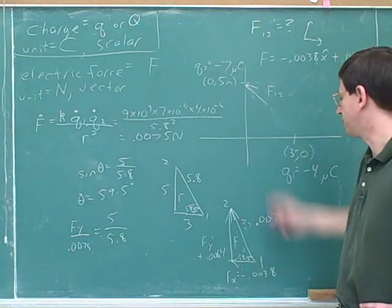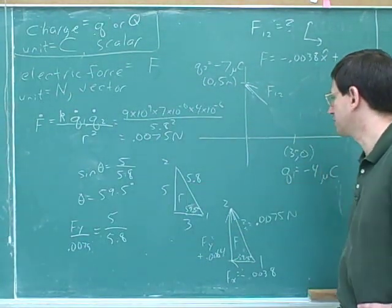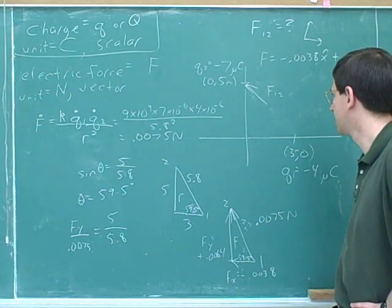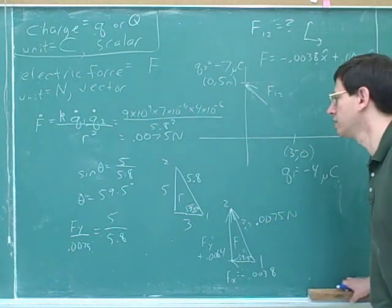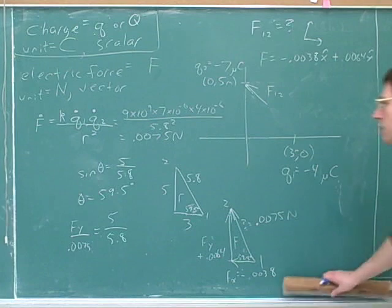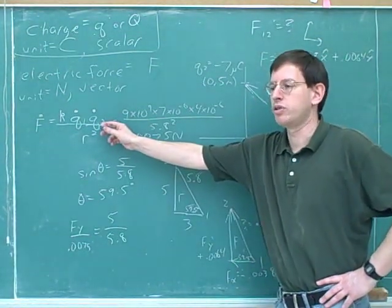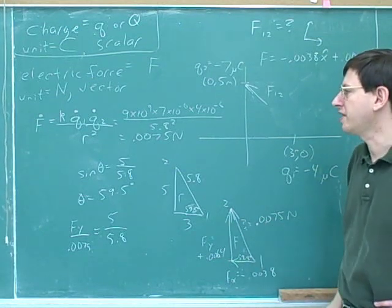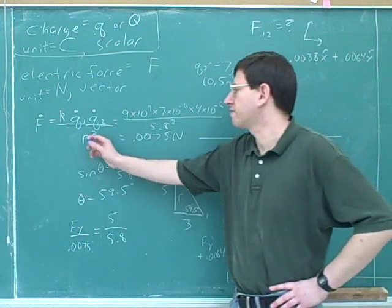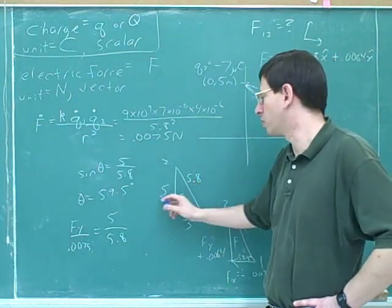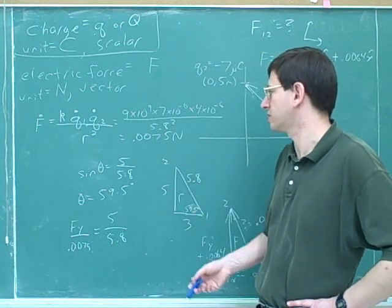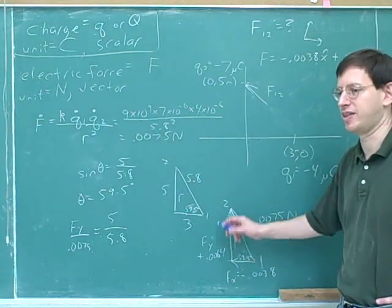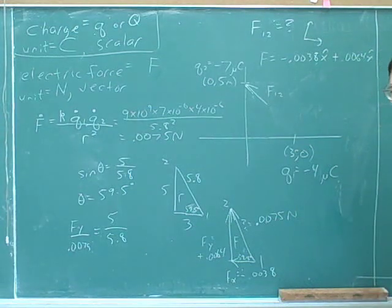So now we've seen how to break the electric force into components using similar triangles, and we've seen that you don't need to use r-hat to figure out signs or directions. Coulomb's Law is for finding the hypotenuse of the force triangle. What do you plug in for r? You plug in the hypotenuse — the overall distance. You don't plug in just the horizontal or vertical distance. Coulomb's Law gives the overall force; it does not directly give you the x and y components — you have to figure those out separately using the similar triangles.